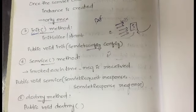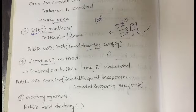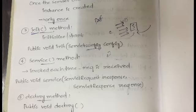So in total we have five steps: the class is loaded, the instance is created, the init method is called, the service method is called, and then the destroy method is called. This is the lifecycle of a servlet — very simple, very short, and very important.